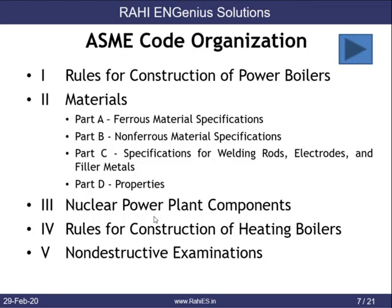The ASME Boiler and Pressure Vessel Code is organized into 12 sections. Section 1 contains rules for construction of power boilers. Section 2 covers materials and is divided into four parts: Part A for ferrous material specifications, Part B for non-ferrous material specifications, Part C for specifications of welding rods, electrodes, and filler metals for both ferrous and non-ferrous materials, and Part D for the properties of all materials listed in Parts A, B, and C. Section 3 covers nuclear power plant component requirements, Section 4 covers rules for construction of heating boilers, and Section 5 covers NDE examinations.